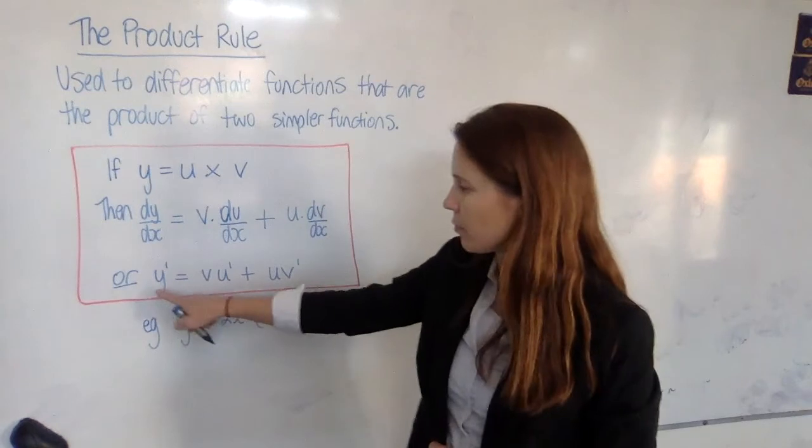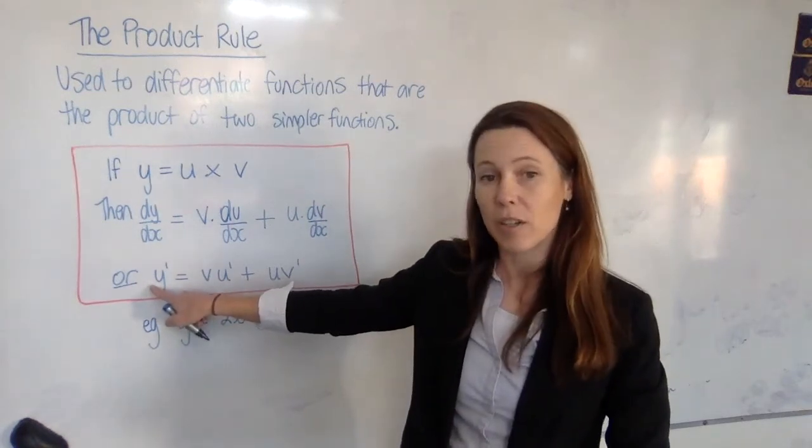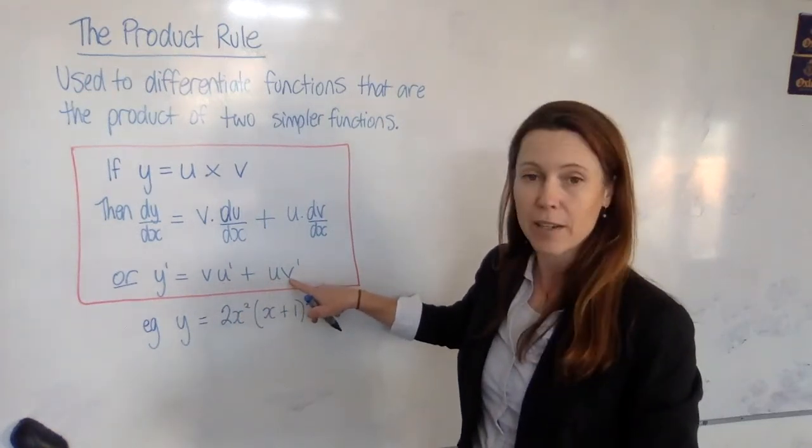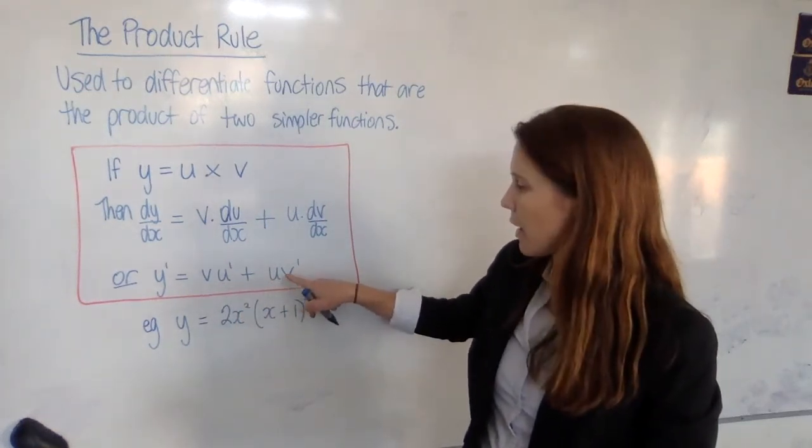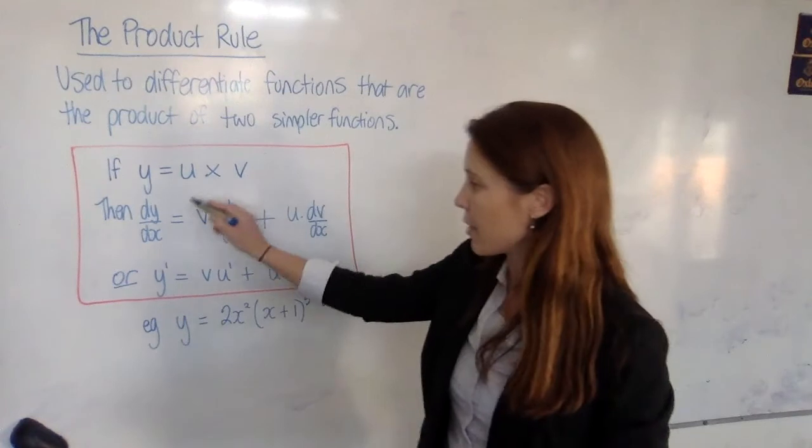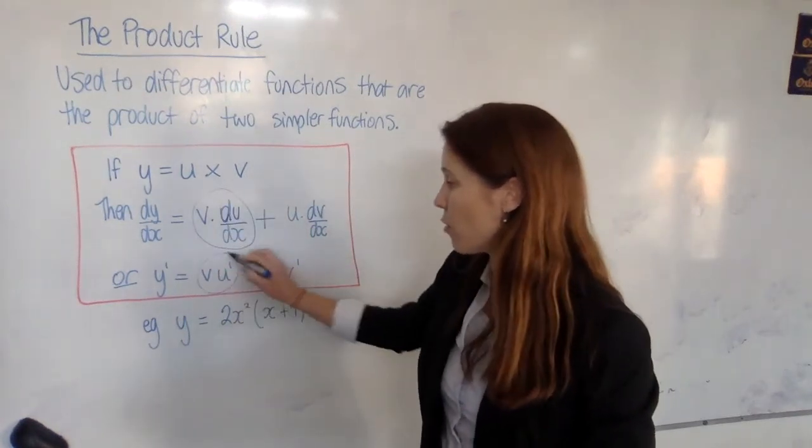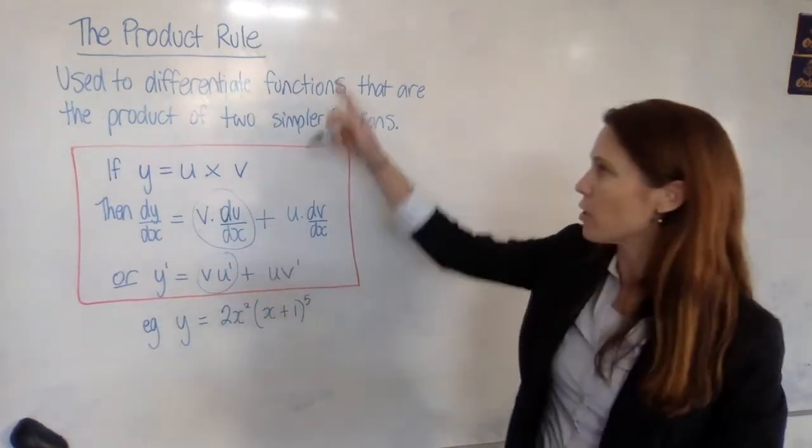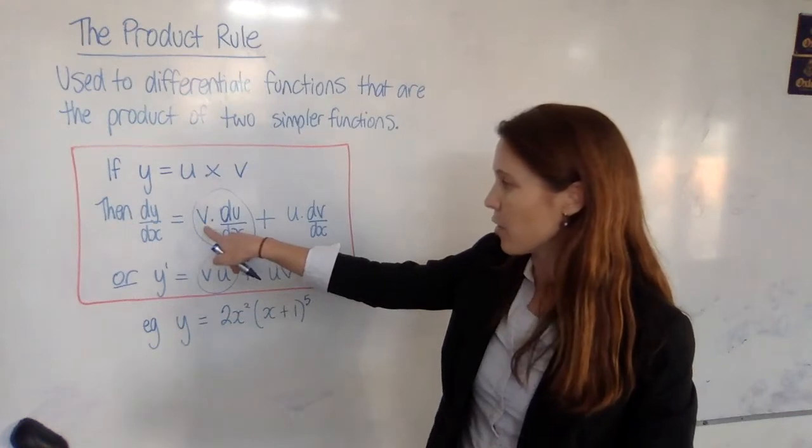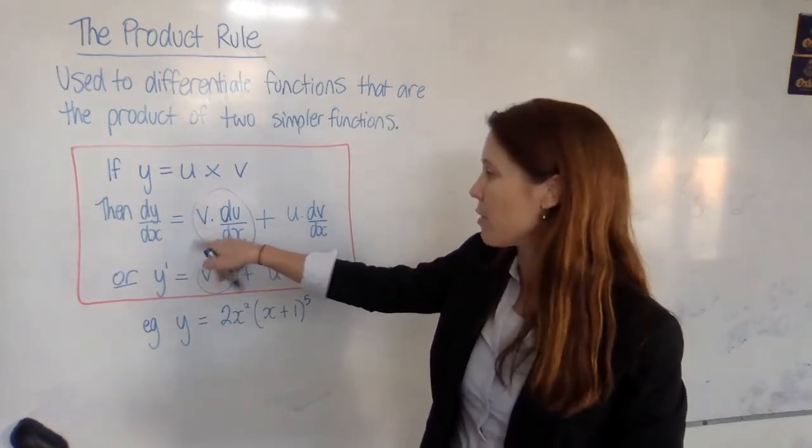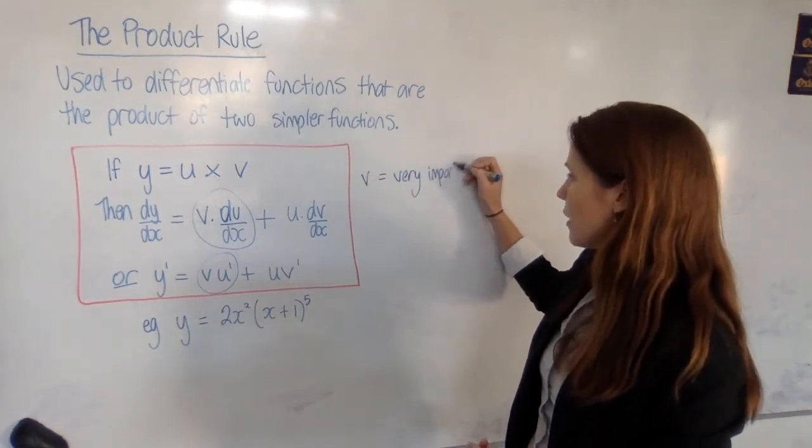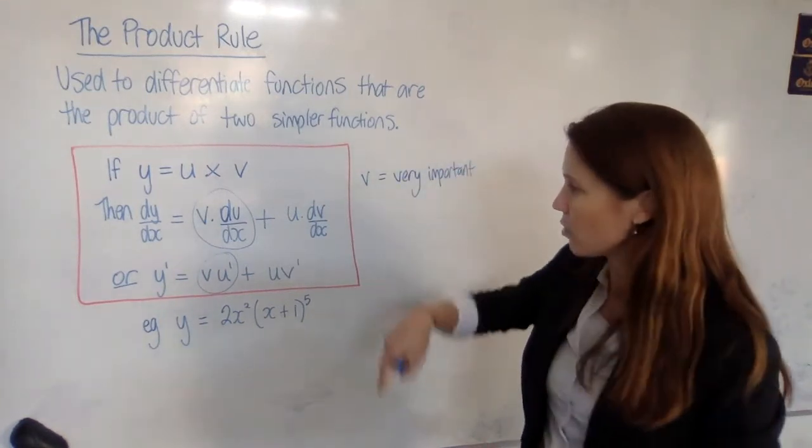Now the other way that people like to write it, using the y dash notation, you can say y' equals vu' plus uv'. Now, if you're adding two things together, technically it wouldn't really matter which order you add them in. Can I recommend that you always add them with the v times the u' first? Because when we learn the quotient rule, you'll see that there's some similarities with the product rule, and it'll help you to remember it, to know that the thing that comes first in the first term needs to be v. I remember that by saying v is very important, so you should put it first. And that helps me to get the formula right.